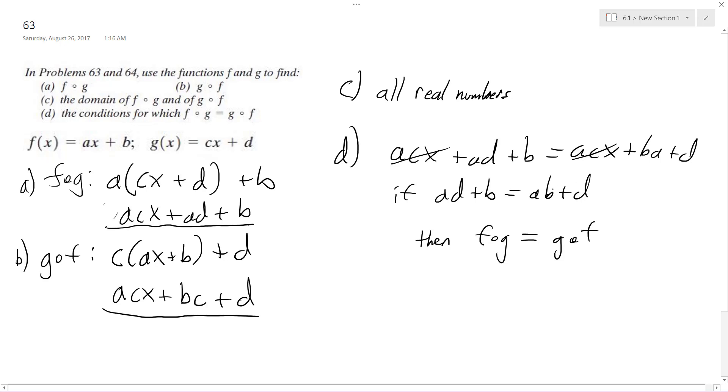Assuming those both are true—probably it would actually be if d and b are equal to each other—but assuming those are true, then that would make f of g and g of f equal to each other.